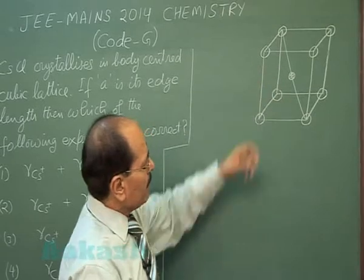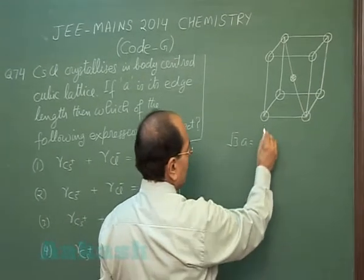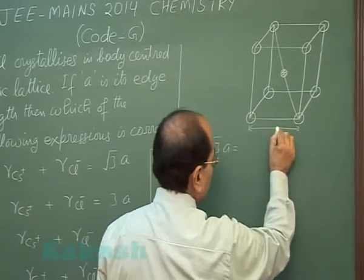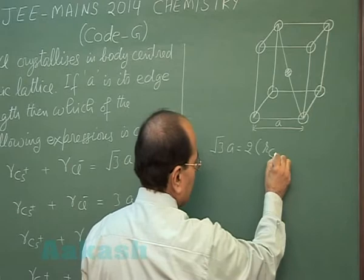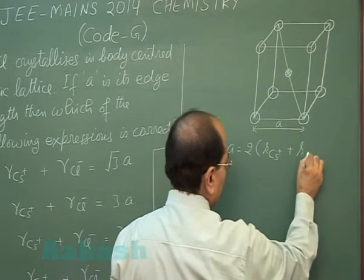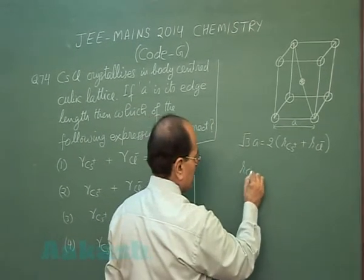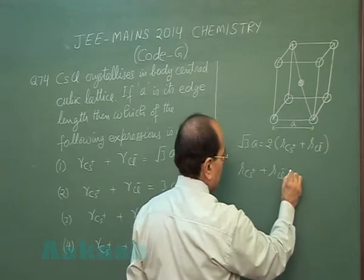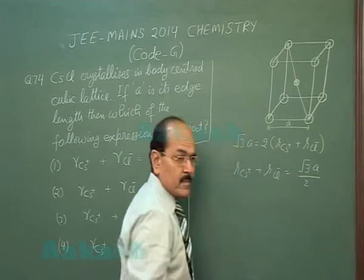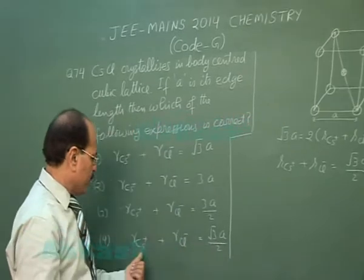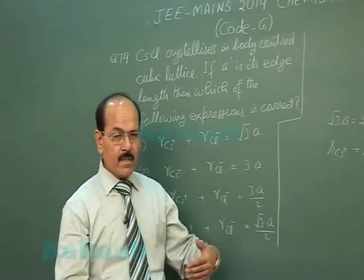The body diagonal of the cube is √3A, where A is the edge length. This body diagonal equals twice the sum of the radius of the cesium ion and the radius of the chloride ion. Therefore, the sum of the radii of cesium ion and chloride ion = √3A/2. The correct answer is the fourth option.